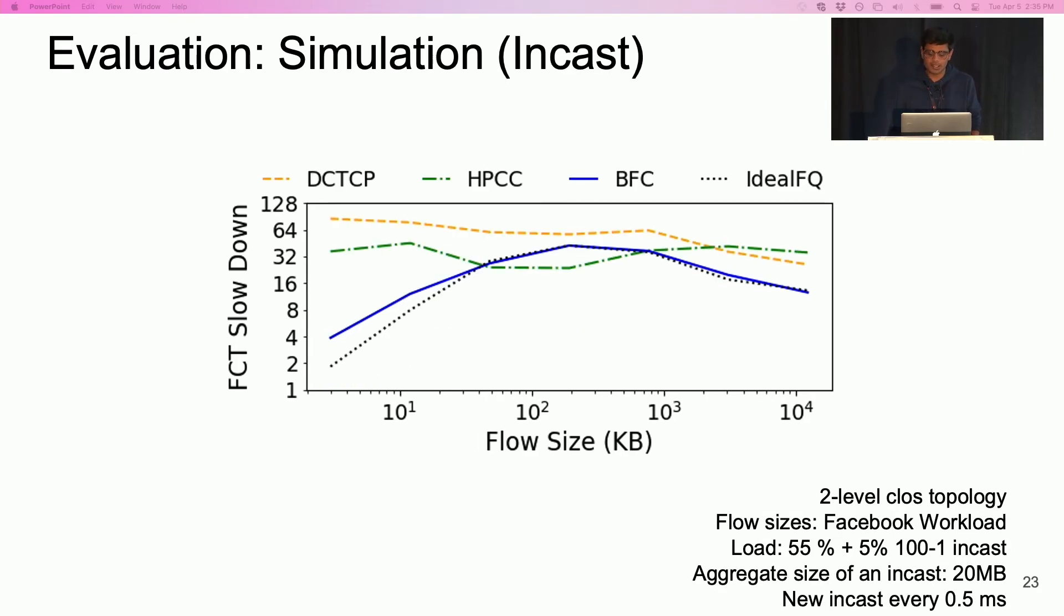Now, let's make the setting more interesting by adding incast traffic to the previous experiment. In this experiment, an incast consists of 100 flows sending traffic to the same receiver simultaneously. With incast, both HPCC and DCTCP experience buffer overruns that degrade performance.